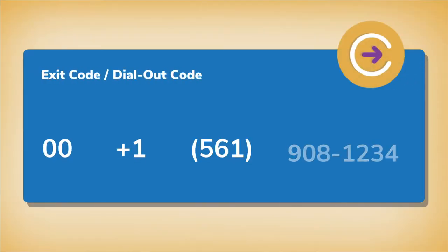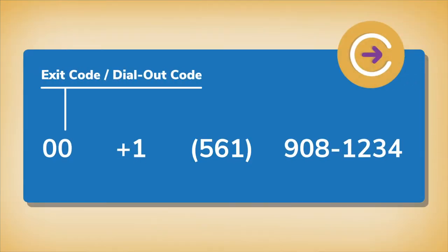First up is the exit code or dial-out code. This prefix typically consists of two to four digits and it's unique for each country. It allows you to dial out of the country. Basically the exit code lets your provider know that you're about to call outside the country. So if you're calling a destination outside the U.S., you'll first dial the U.S. exit code or the plus sign to place an international outbound call.